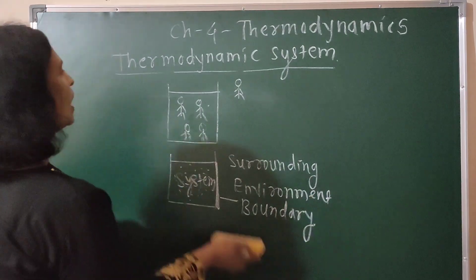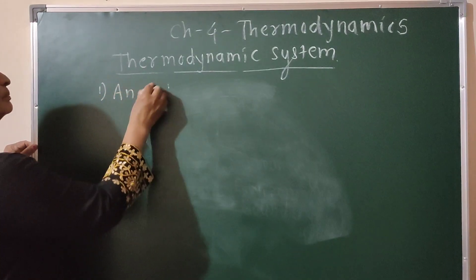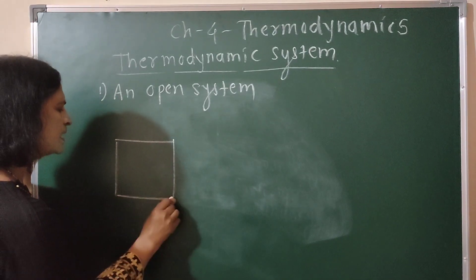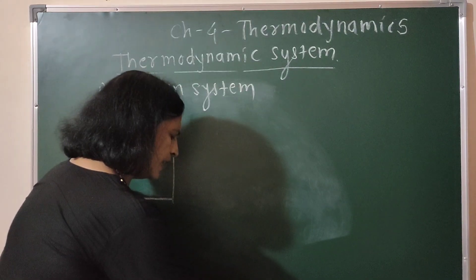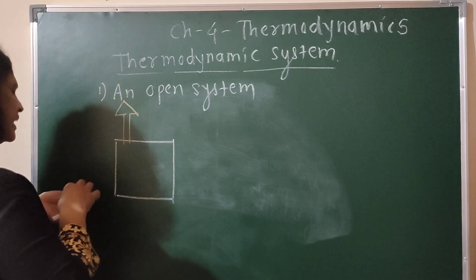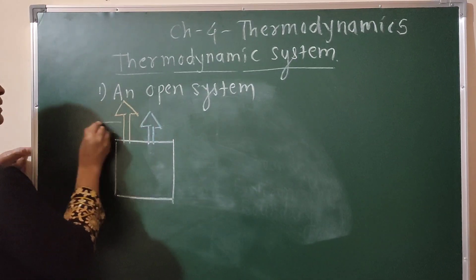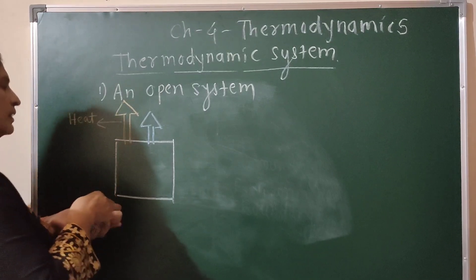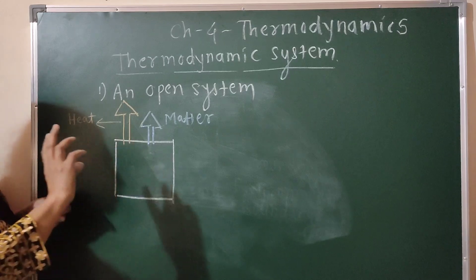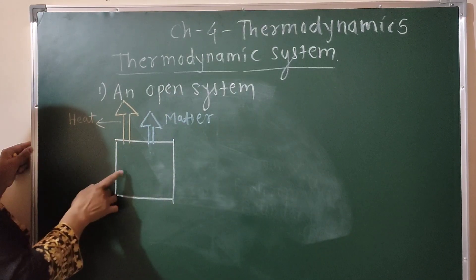There are three types of thermodynamic system. The first is an open system. In an open system, two arrows are shown — one for heat and one for matter. This is a system that freely exchanges both heat and matter with the surrounding, and that system is called an open system.